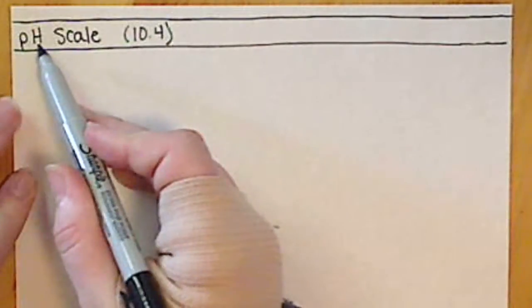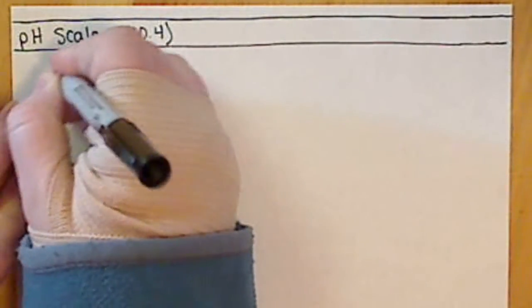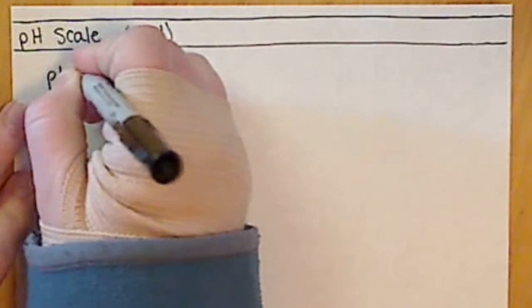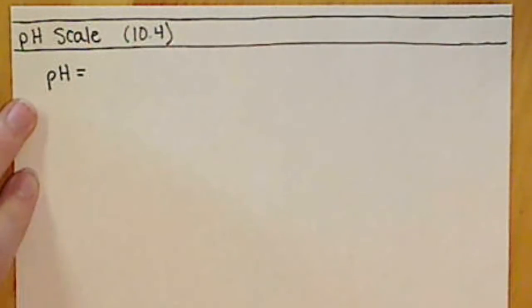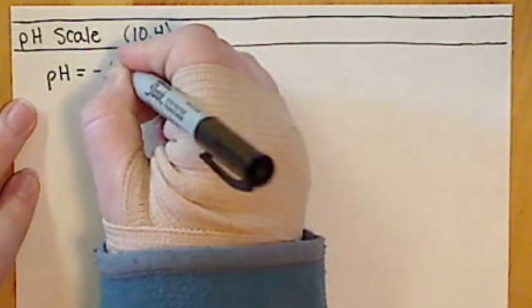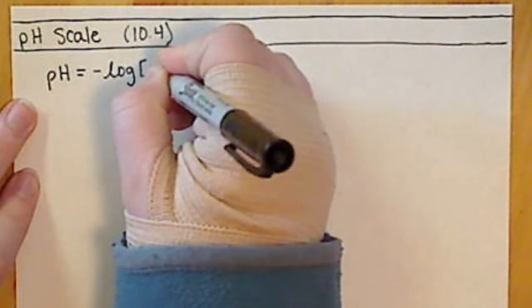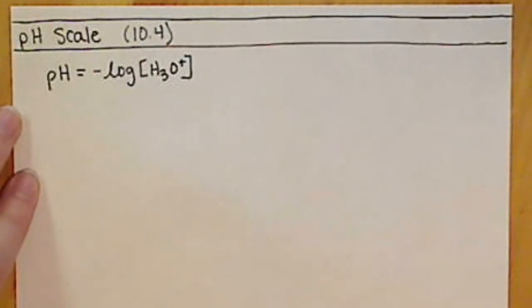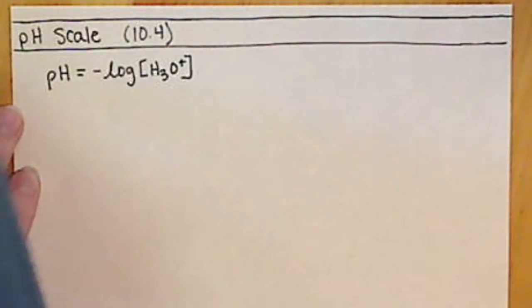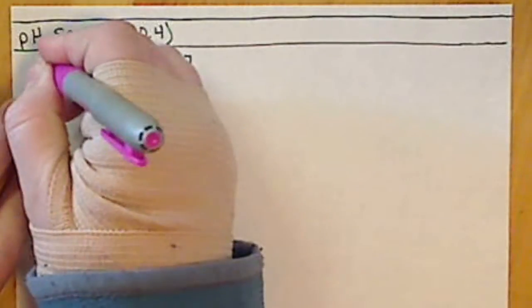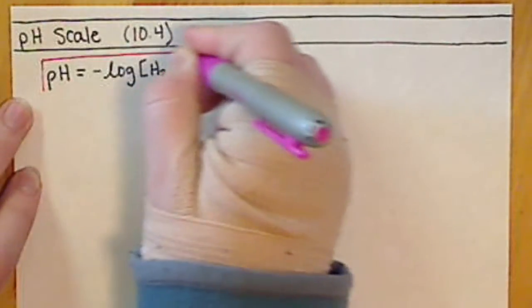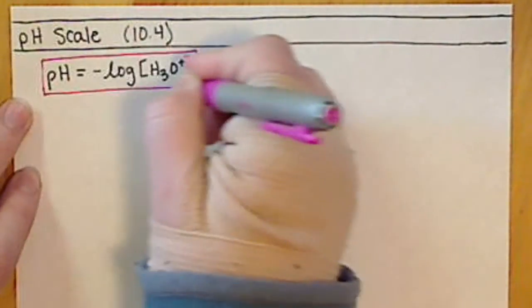pH is defined as, or how we calculate the pH, is the negative log of the concentration of H₃O⁺. This is an equation that you are definitely going to want to know.